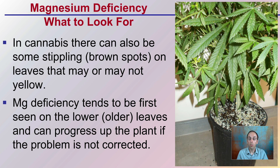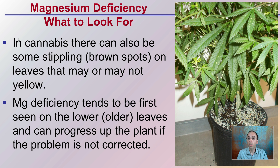In cannabis, there can also be some stippling, some brown spots that you see going on here, at least a little bit in the lower leaves. They may not turn completely yellow — this is a great example of how plants don't always follow the textbook exactly, because this is an actual cannabis plant that was fed magnesium-deficient fertilizer. You can see firsthand how the plant may react. Those brown spots developing are another indication of a potential magnesium deficiency. It tends to be first seen in the lower, older leaves — if you're seeing browning at the top, that might be something else. The deficiency will progress up the plant if the problem is not corrected.